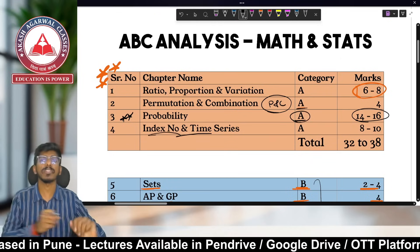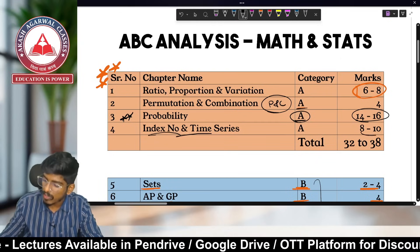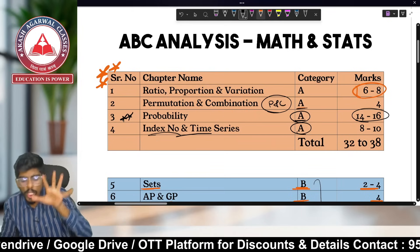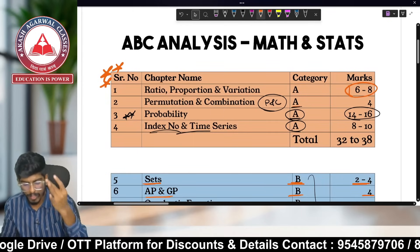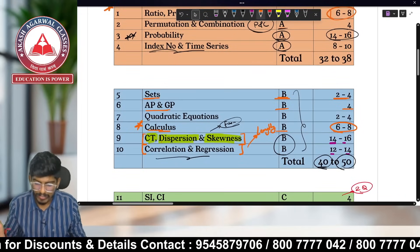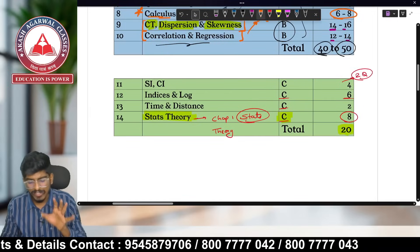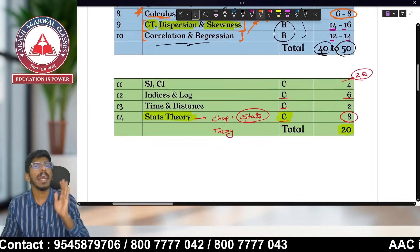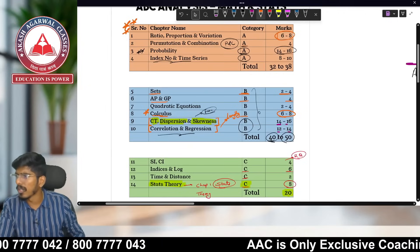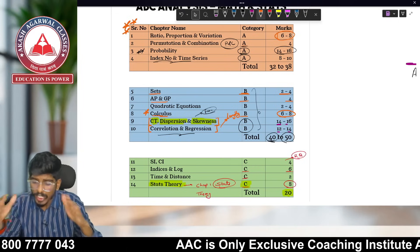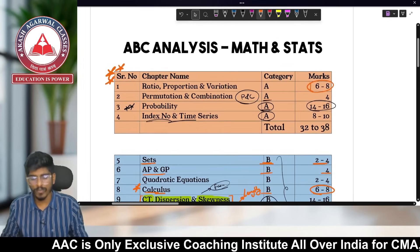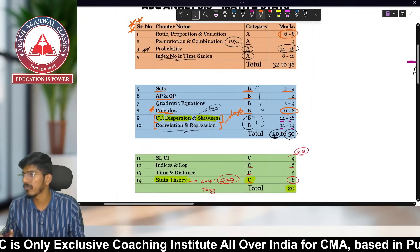The last Category A chapter is Index Numbers and Time Series from Statistics, which gives 8 to 10 marks. So Category A includes: Ratio, Proportion & Variation; Permutation & Combination; Probability; and Index Numbers & Time Series. Category B includes Sets, AP-GP, Quadratic Equations, Calculus, Central Tendency/Dispersion/Skewness, and Correlation/Regression.